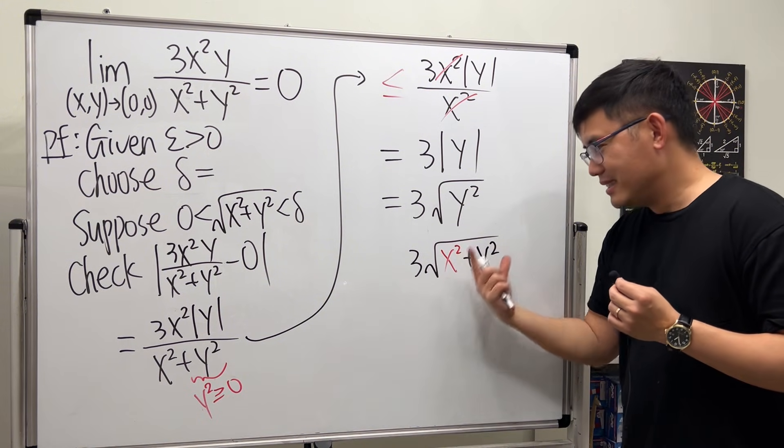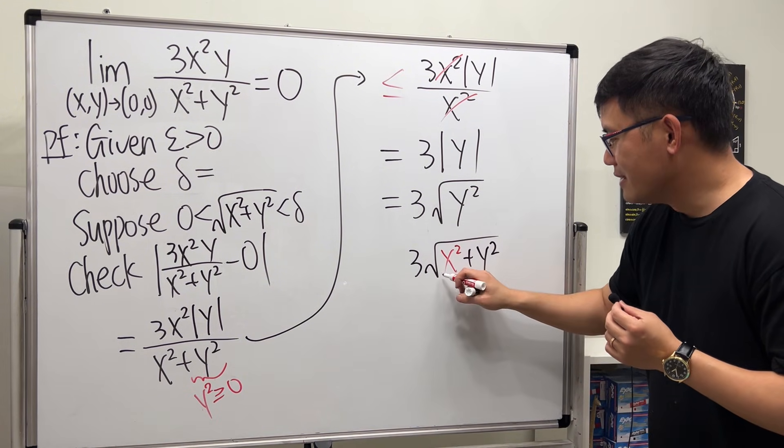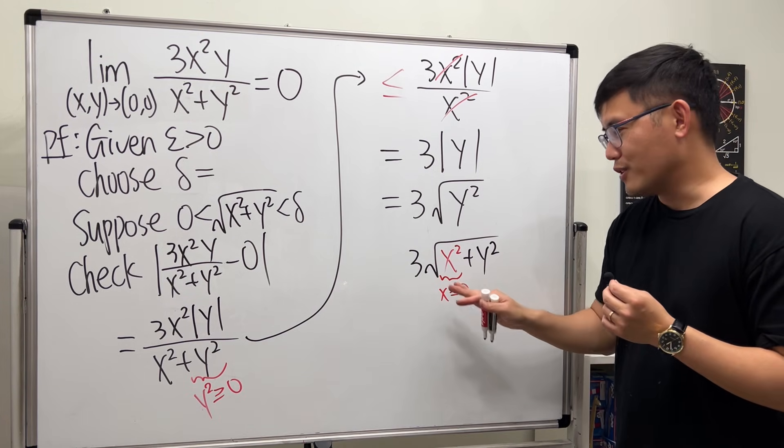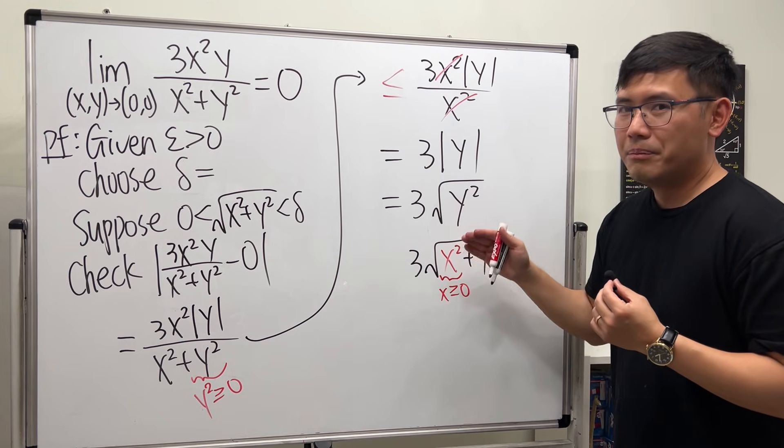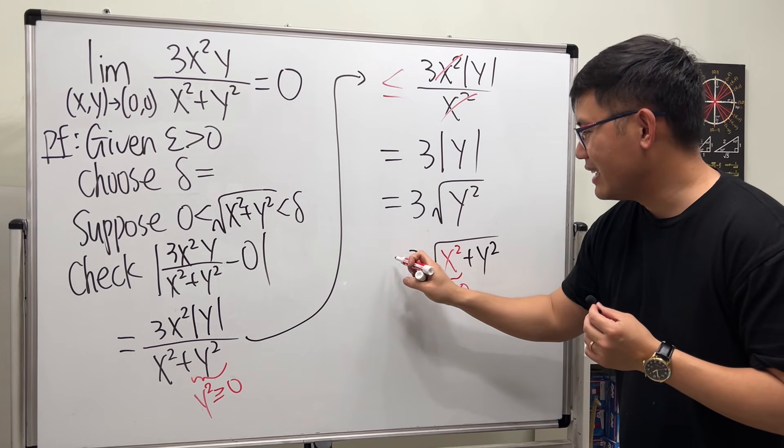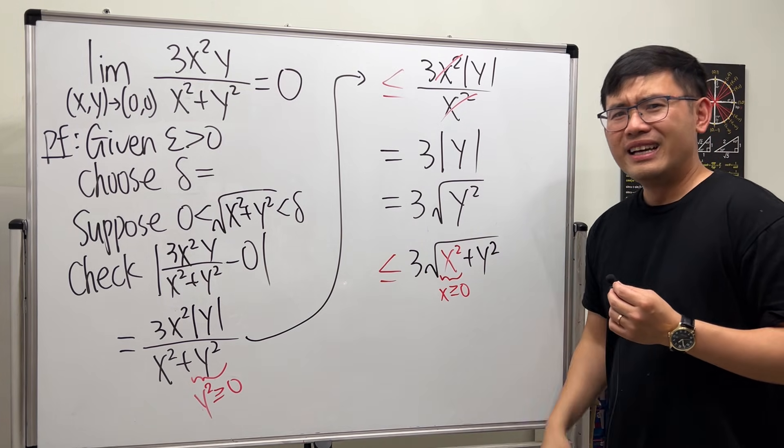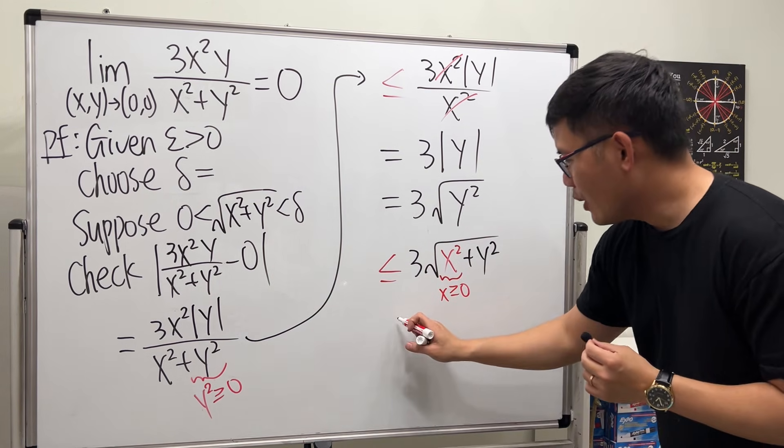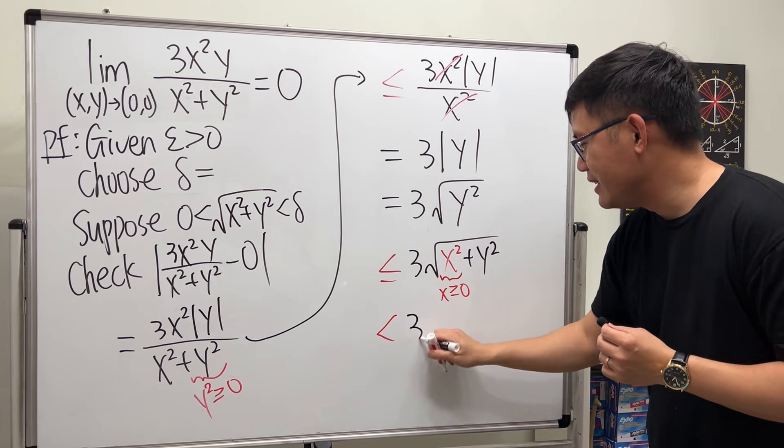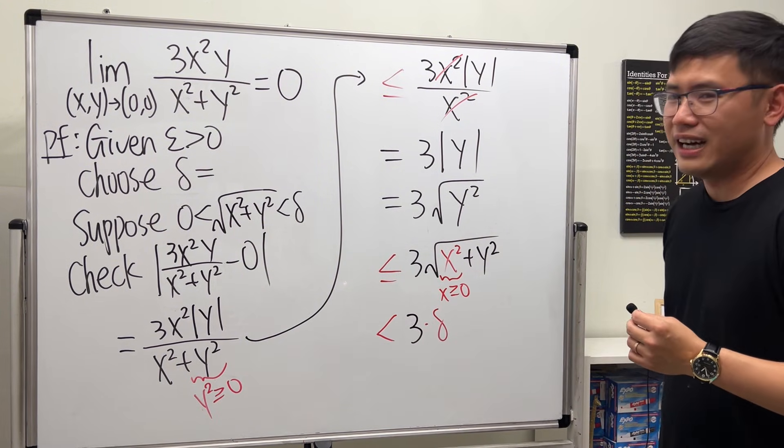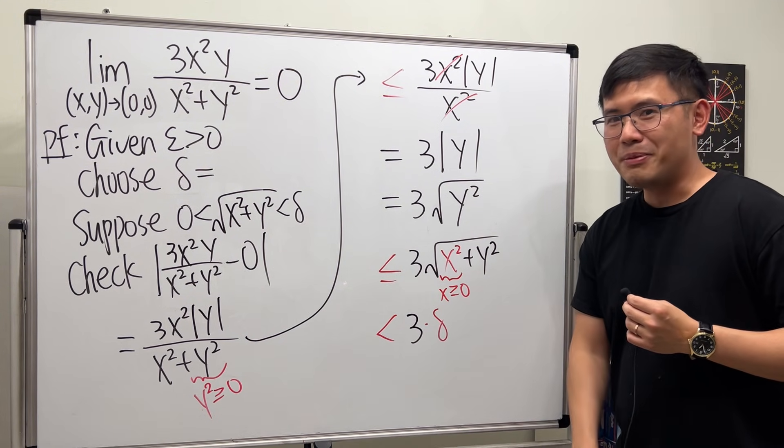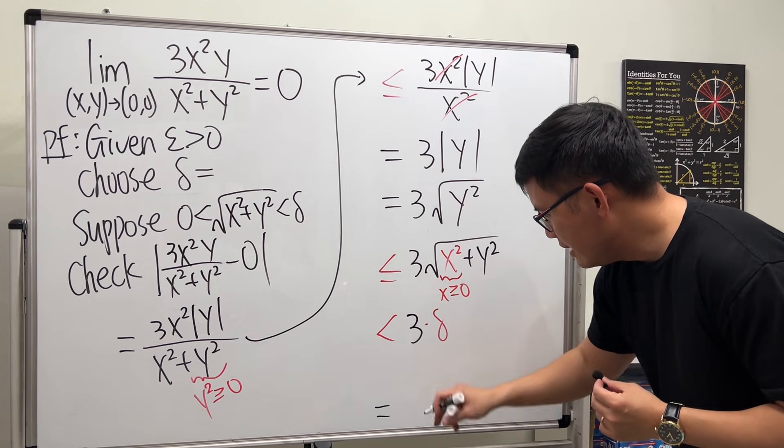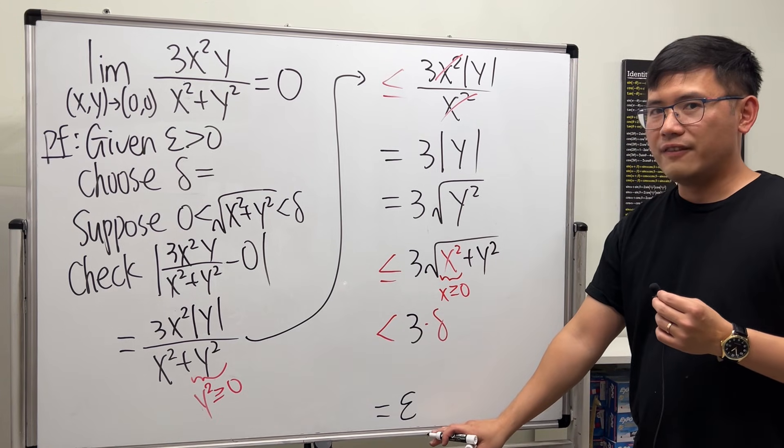So, imagine if I just add the x² inside here. Which expression is bigger? This expression is going to be bigger. Because x² is going to be non-negative. And the square root is an increasing function. So, for sure, this right here will be bigger than or equal to that. So, we can say, this is less than or equal to this. And why do we do that? Because this guy is less than delta. Yo, this is less than 3 times delta.